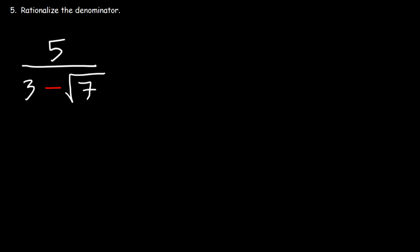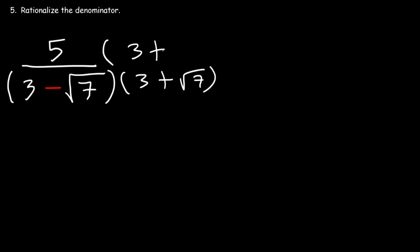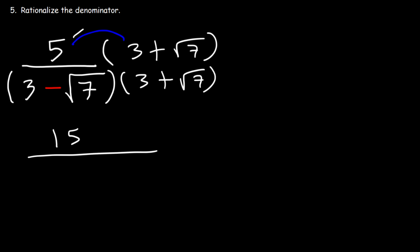Number 5. Rationalize the denominator. What we need to do is multiply the top and the bottom by the conjugate of the denominator. The conjugate of 3 minus root 7 is simply 3 plus root 7. Whatever you do to the bottom, you have to do to the top, in order that the value of the entire fraction remains the same. So let's begin by distributing 5: 5 times 3 is 15, and 5 times root 7 is 5 root 7.